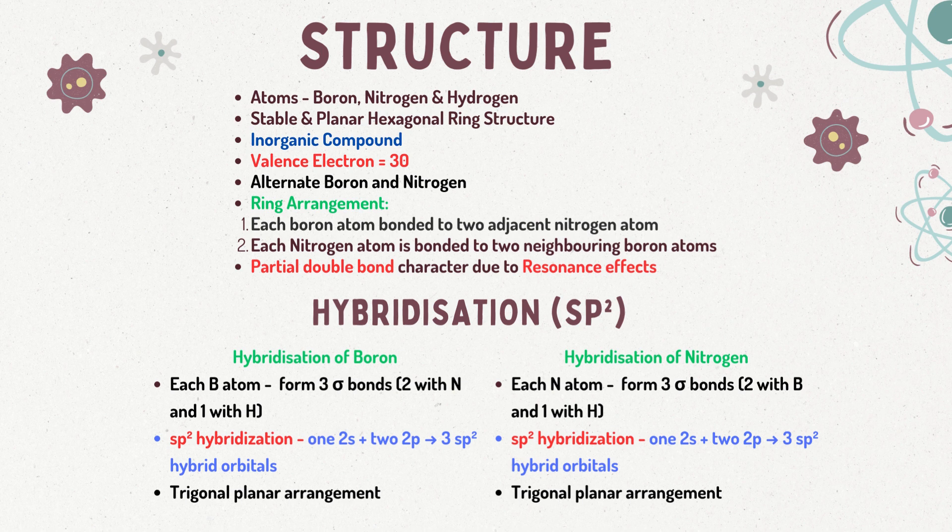The boron-nitrogen bonds in borazine have a unique character, often described as having partial double bond character due to resonance effects within the ring. This characteristic resonance imparts stability to the compound, similar to the stability of the alternating single and double bonds in benzene.